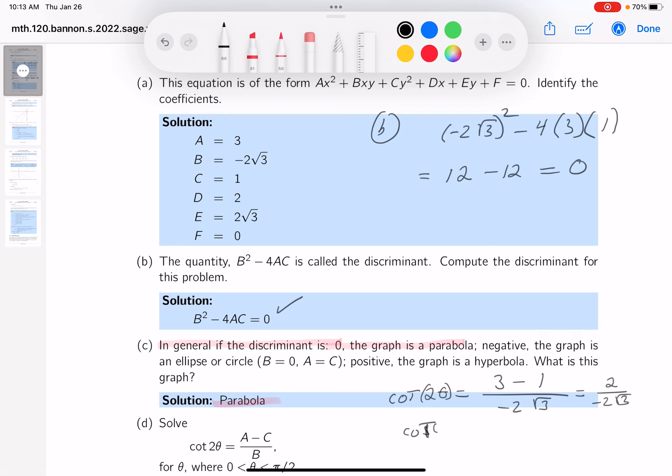So I'm going to say cotangent. Whoops. Let me get my eraser out. It doesn't look right. That the cotangent of 2 theta is equal to, well, that would be minus 1 over root 3, right?